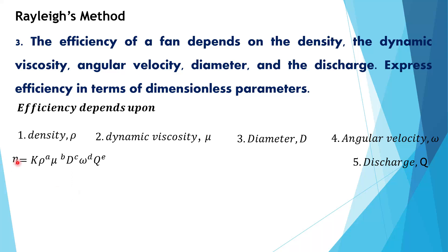Efficiency is equal to constant times density power a, dynamic viscosity power b, diameter power c, angular velocity power d, and discharge power e. Now I will represent each parameter in terms of M, L, and T.